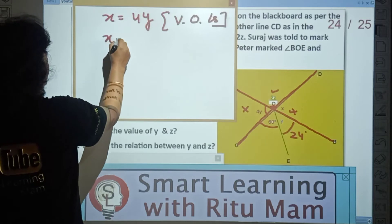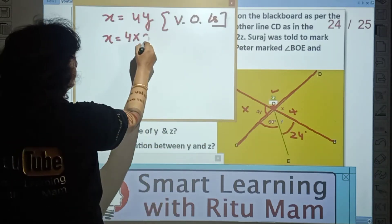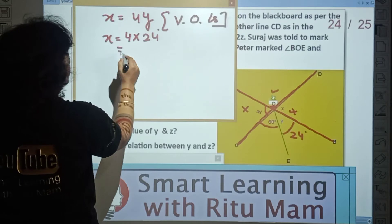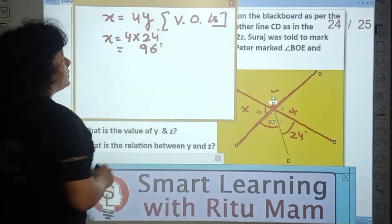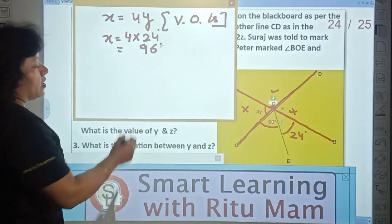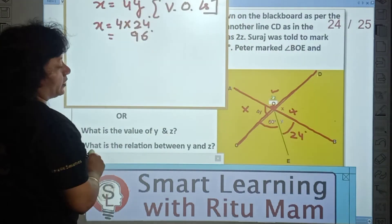So X equal to 4Y by vertically opposite angles. From here, X equal to 4 into Y. We calculated Y as 24. Solve it: 4 times 24 is 96. So we have X as well.